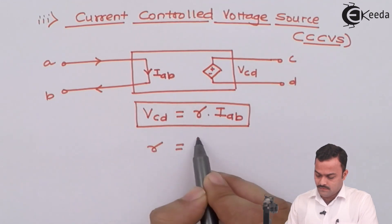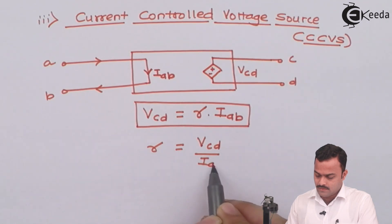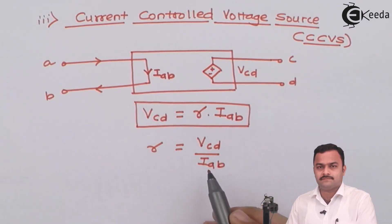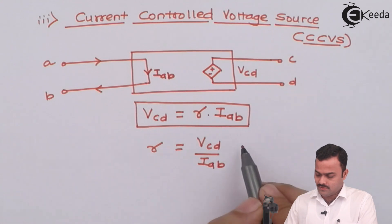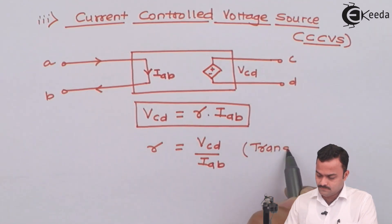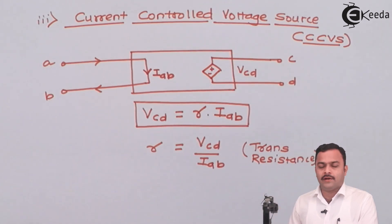We will get VCD upon IAB. So ratio of voltage and current is nothing but resistance. But there is voltage and current of different ports. So we call this trans-resistance.